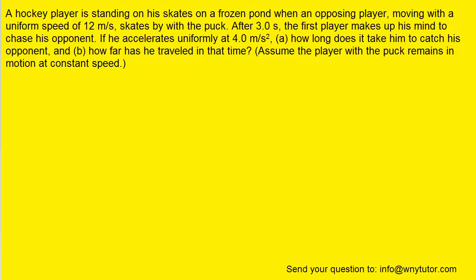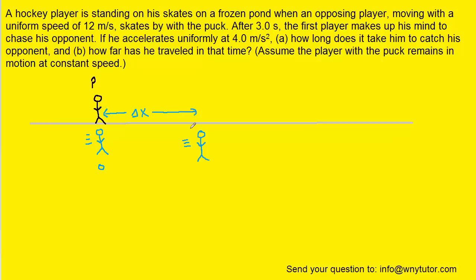If you haven't done so yet, please pause the video and try the question on your own before moving on. We can begin by drawing a picture. Here we have the player, denoted with a P, and then his opponent comes along, moving at a constant speed, grabs the puck and begins to move away.